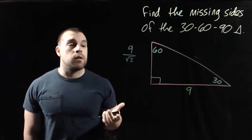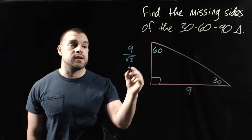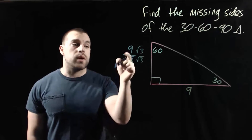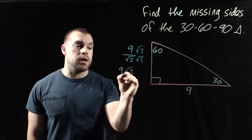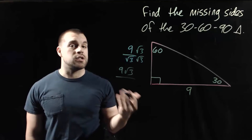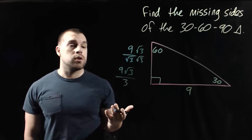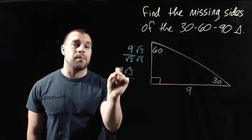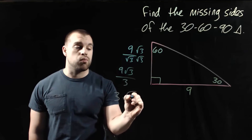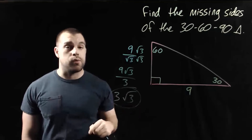Now remember, we're not allowed to leave that radical on the bottom of the fraction, so we're going to rationalize by multiplying top and bottom by root 3. On top, we get 9 root 3. On bottom, root 3 times root 3 gives us 3. Then we reduce the fraction: 9 divided by 3 is 3, but we still have that root 3 left over. So the length of the short leg is 3 root 3.